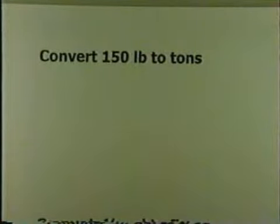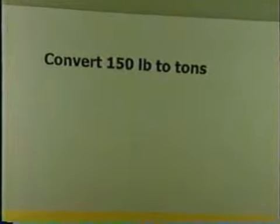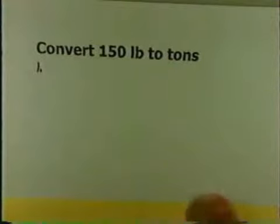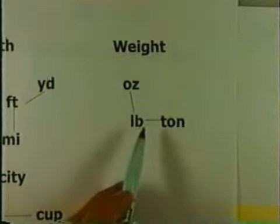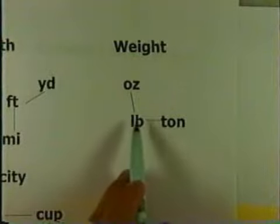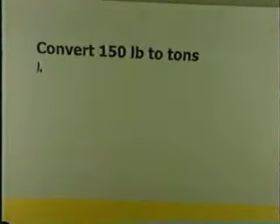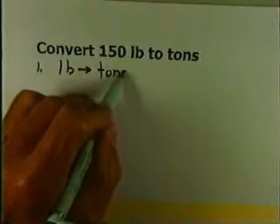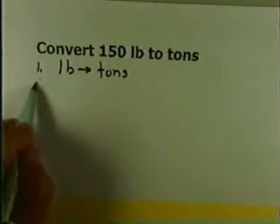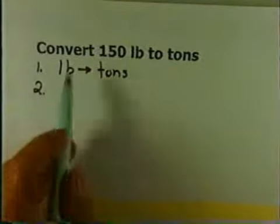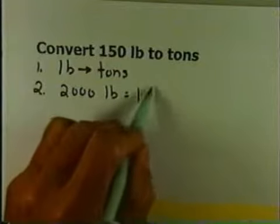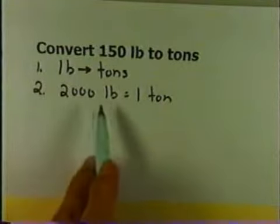Let's convert 150 pounds to tons. The first step is to get the route — I want to get from pounds to tons. Looking at the chart, I can go straight from pounds to tons; I have a direct route. The second step is to list the conversion fact. You must memorize this one: 2,000 pounds is one ton.